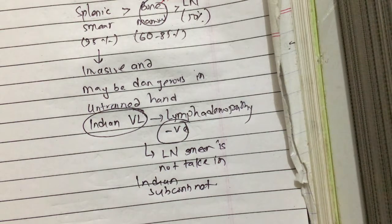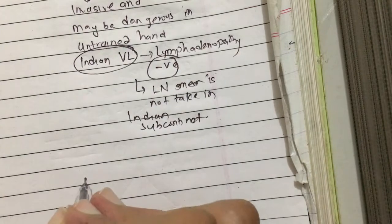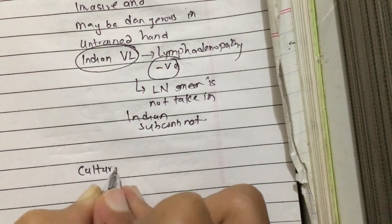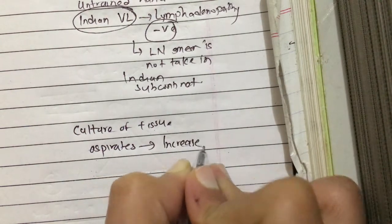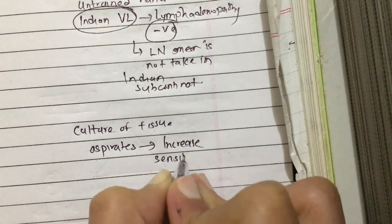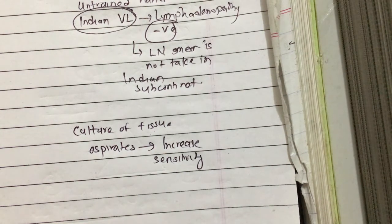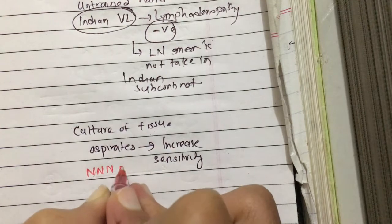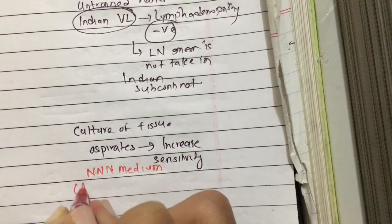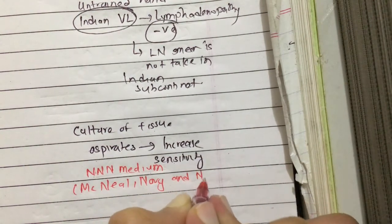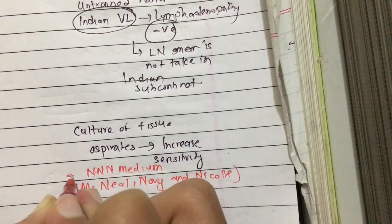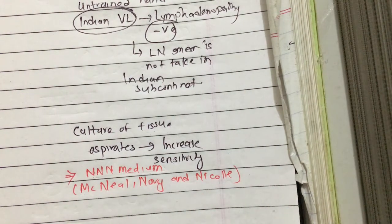The sensitivity of the smear can be further increased by culture. Culture of tissue aspirates is done using NNN medium — NNN means McNeil, Novi, and Niccoli medium. This is the most common medium used for the culture of leishmaniasis.